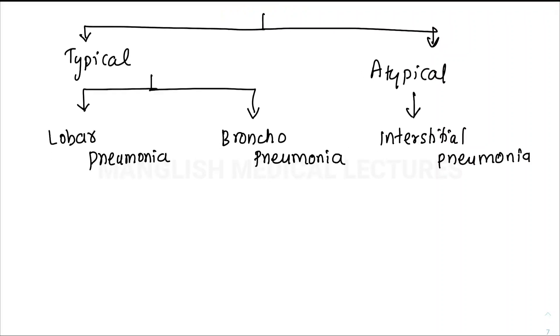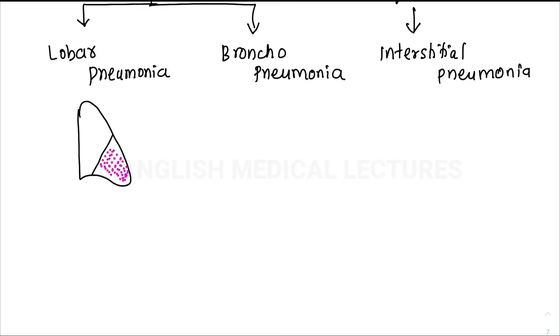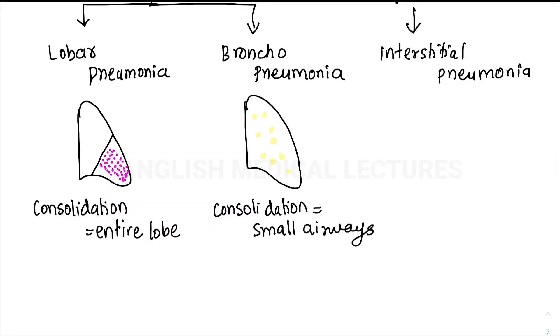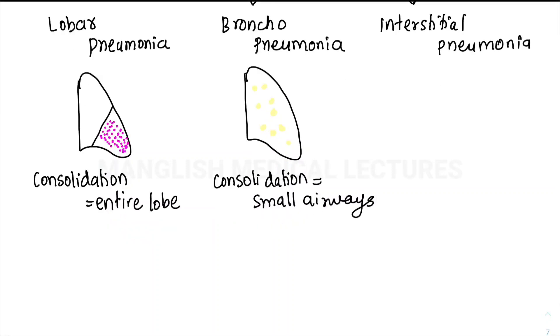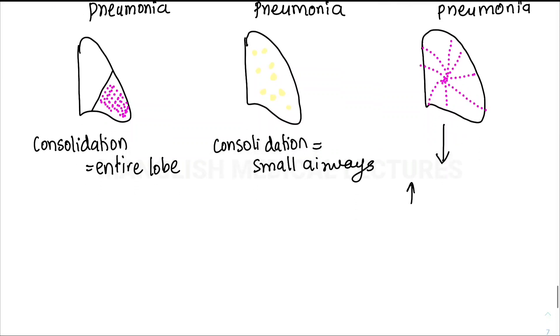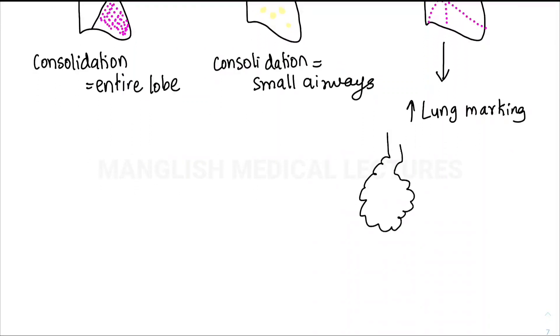In lobar pneumonia, the consolidation is confined to a particular lobe or an entire lobe. In bronchopneumonia, you have patches of consolidation usually affecting the smaller airways. In interstitial pneumonia, atypical pneumonia, you have increased lung markings in X-ray. The interstitium is markedly affected; the alveolar sacs are least affected. This interstitial thickening causes increased markings. Atypical is typically seen in viral infection; typical pneumonia is usually seen in bacterial infections.